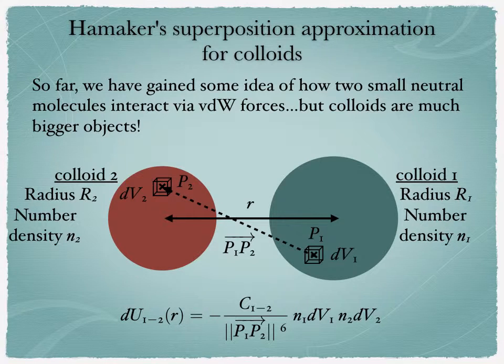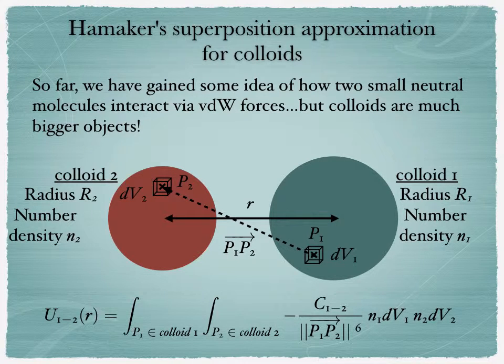So this is how two tiny fragments of the colloids interact with each other via the van der Waals interaction. But if you want to know the total interaction, then you need to integrate over all possible points, p1 and p2 in colloid 1 and in colloid 2. So this is quite a complicated integral to compute and I won't delve into details of this calculation in this lecture.